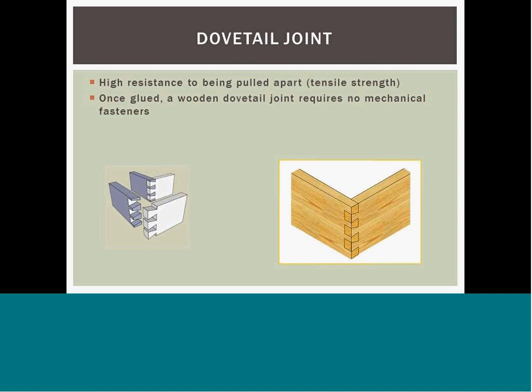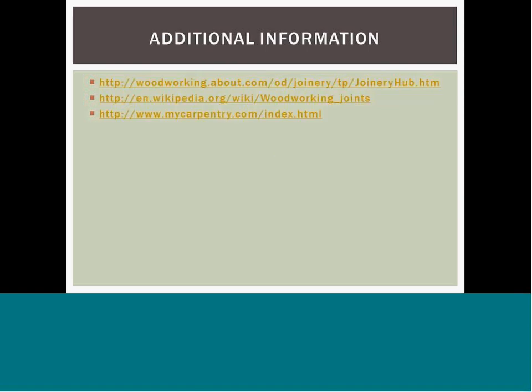The dovetail joint is a technique most commonly used in woodworking joinery, including furniture, cabinets, log bits, and traditional timber framing. Resistant to being pulled apart, the dovetail joint is commonly used to join the sides of a drawer to the front. The pins cut from the end of one board lock with a series of tails cut into the end of another board. The pinned tails have a trapezoidal shape, and the wooden dovetail joint requires no mechanical fasteners. For more information, please use the websites referenced on this slide.